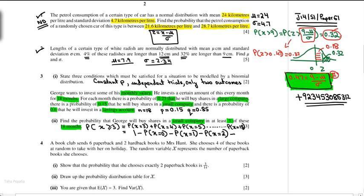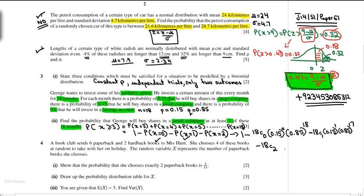So the expression becomes: 1 minus [18C0 × (0.15)^0 × (0.85)^18 + 18C1 × (0.15)^1 × (0.85)^17 + 18C2 × (0.15)^2 × (0.85)^16]. Then ask students to solve it. Let's move to question 4.